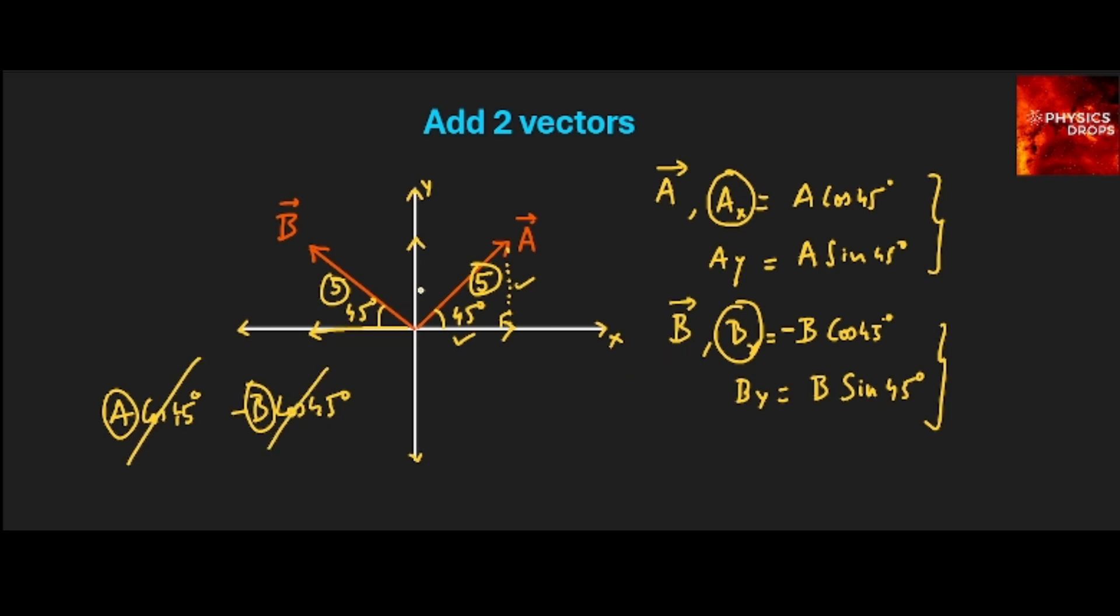So we are left with only the y components in the same direction of these two vectors, which will add Ay plus By, which will be 5 sin 45 for Ay, substituting A with 5, magnitude is 5, plus 5 sin 45. This will be 2 times 5 sin 45, which is 10 times sin 45. Sin 45 is 1 by root 2, so 10 by root 2 in the y direction, positive y direction will be the resultant vector of these two vectors.